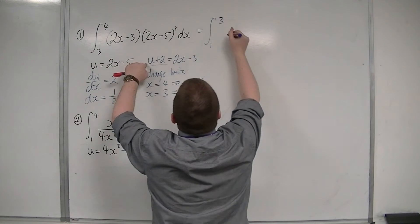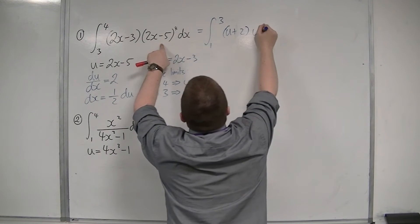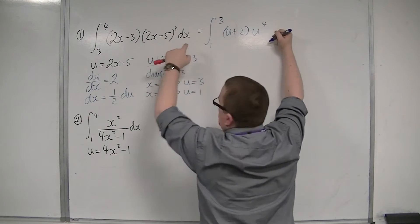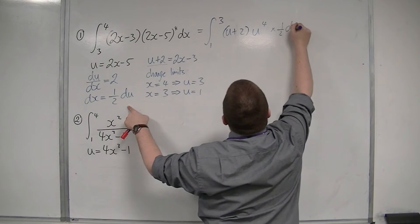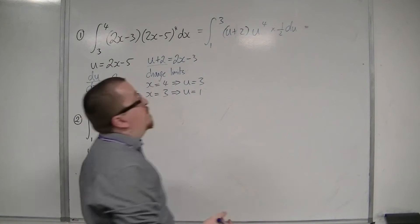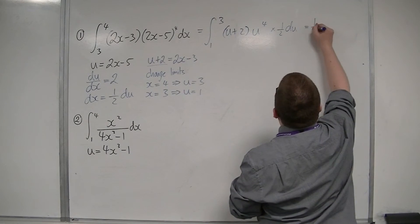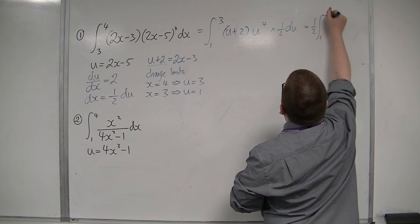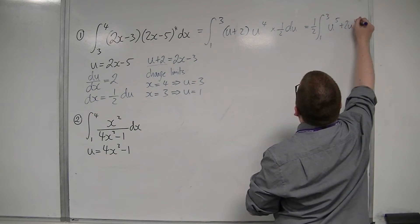So I'm integrating between 1 and 3, 2x minus 3 is u plus 2, 2x minus 5 is u to the power of 4, and dx is 1 half du. So I can bring the half out the front, I'm going to expand that bracket.